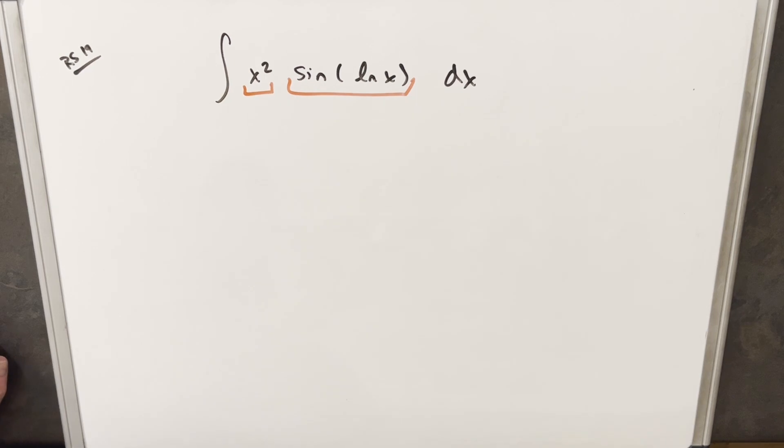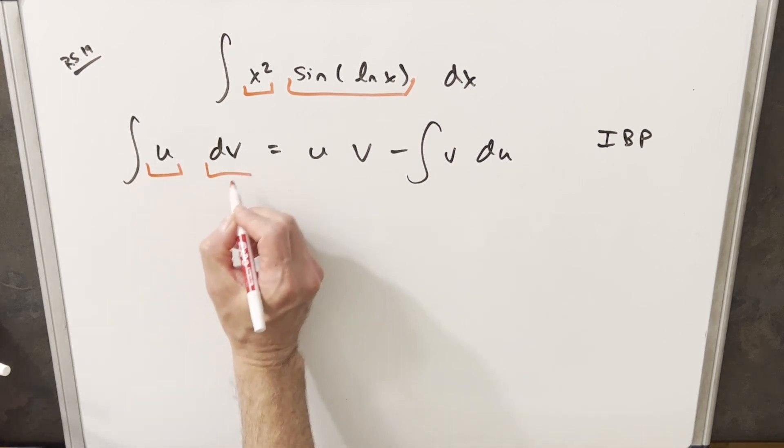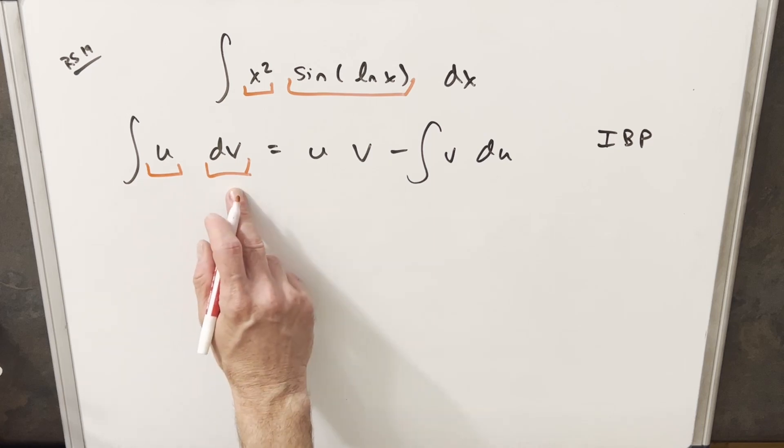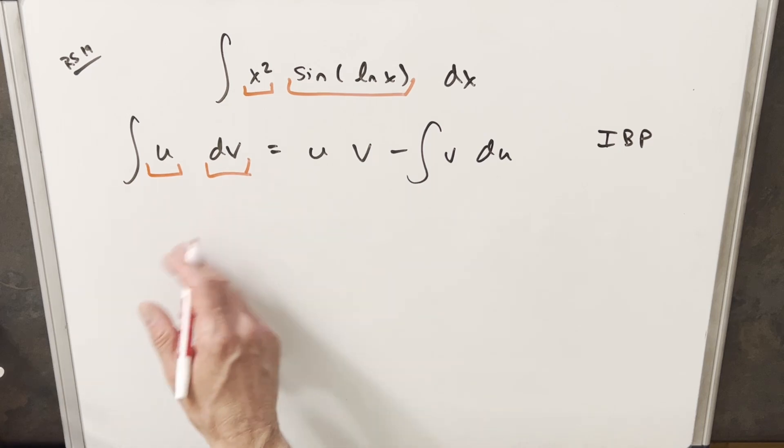For integration by parts, let's just look at the integration by parts formula really quick. We have our integration by parts formula here on the board, and just notice we're going to have two parts. We're going to have this part u that we're going to want to differentiate and this part dv to integrate, so we kind of have a little bit of a choice to make.